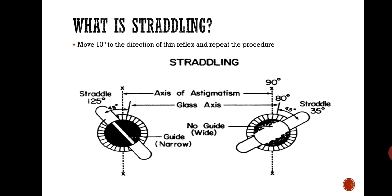For example, scoping the right eye with the axis at plano minus 1 at 90 degrees: look at the right side figure. You move 45 degrees apart from 90 degrees — since 90 degrees is the axis of your cylinder, moving 45 degrees apart and then scoping gives you a wide reflex, as seen in the figure.